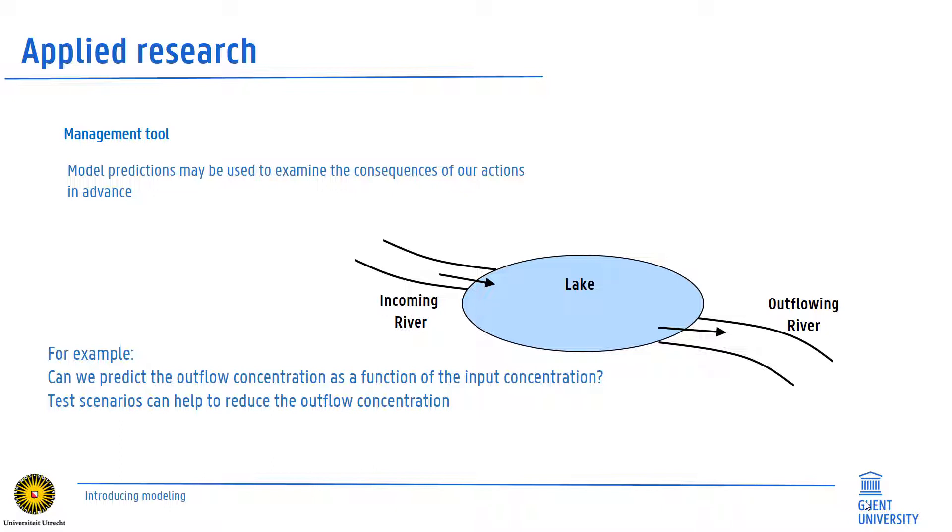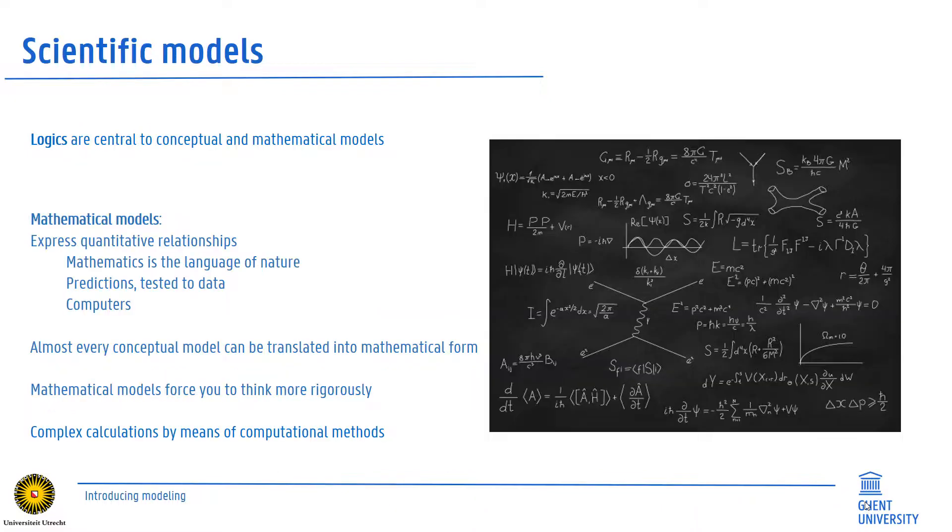Models, for instance, may help to predict the outflow concentrations of certain pollutants from lakes after some upstream pollution by dumping or leaking. Scientific models always have in common that they rely on logics and that they are expressed into a common language of mathematics.